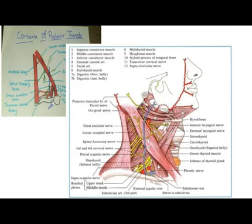Now let us discuss the contents of the supraclavicular triangle, also called the subclavian triangle. As you can see in the image and diagram, the supraclavicular triangle has three trunks of the brachial plexus — the upper, middle, and lower trunk. I have also drawn all three trunks of the brachial plexus in this diagram.